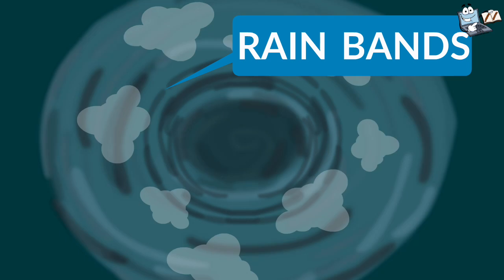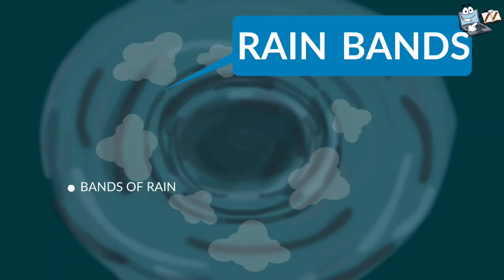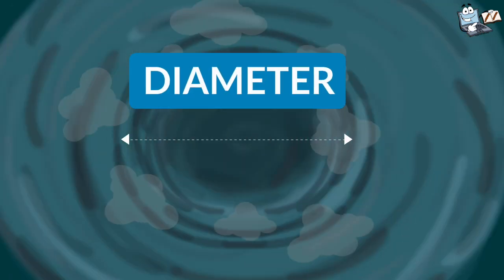Rain bands are large spiraling bands of rain that can drop huge amounts of rainfall, which results in flooding.